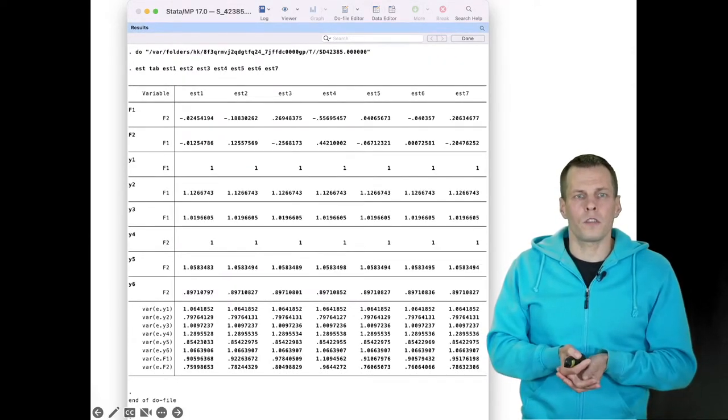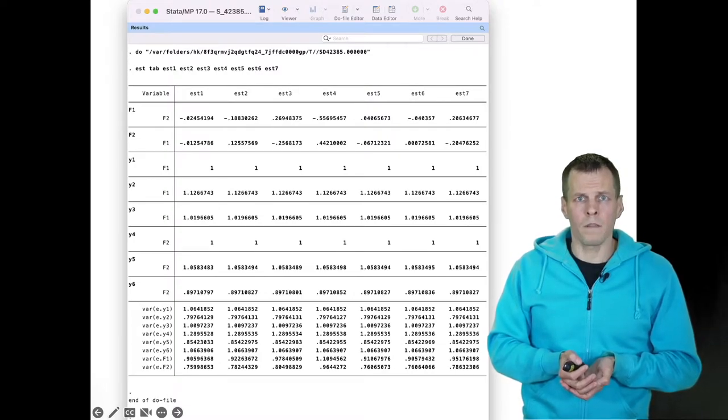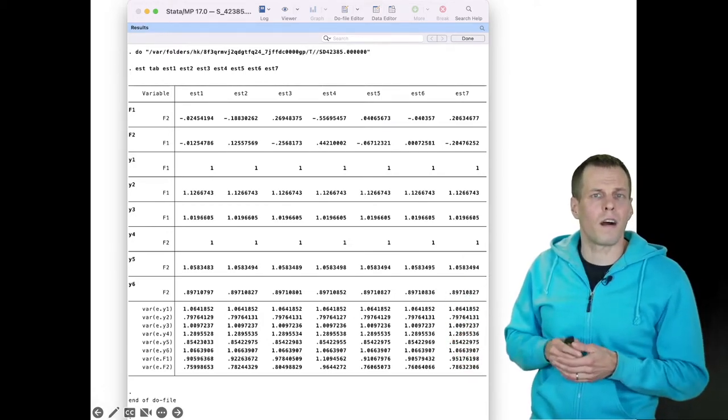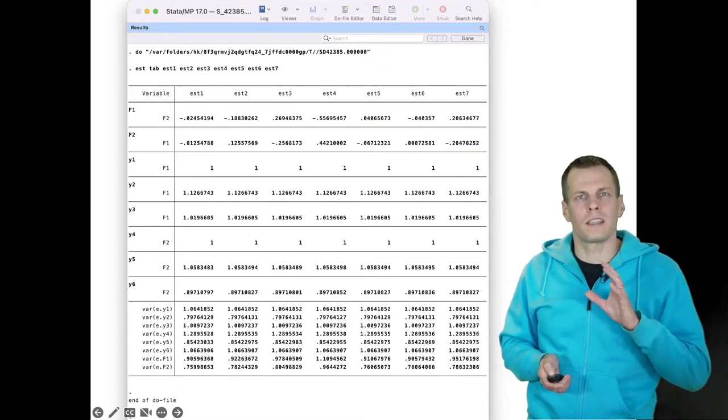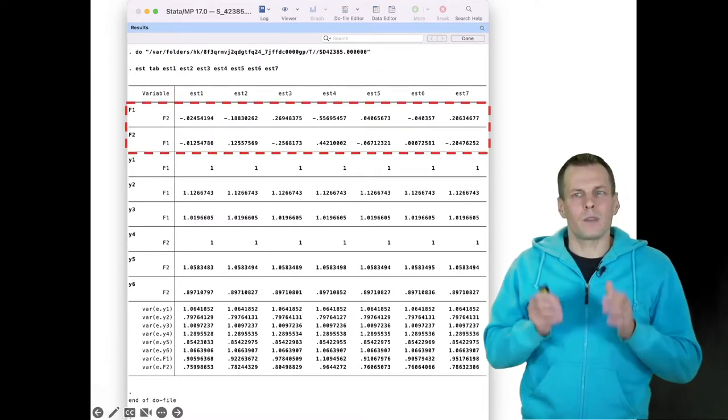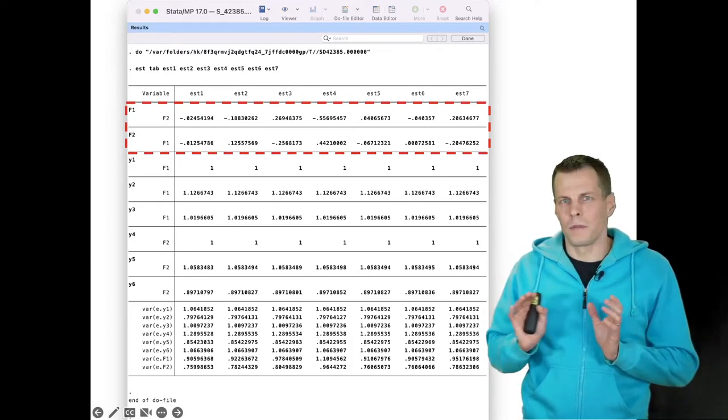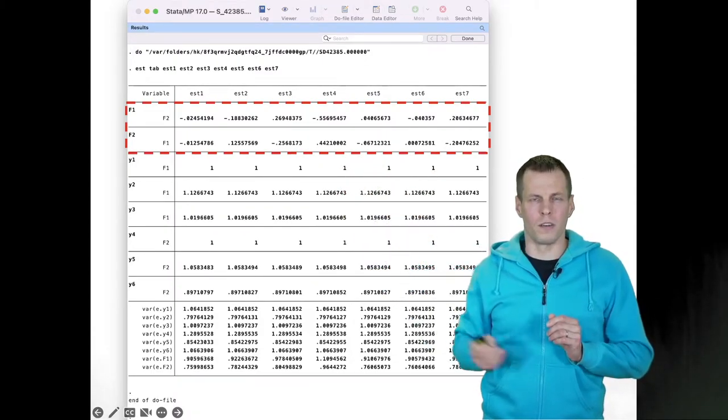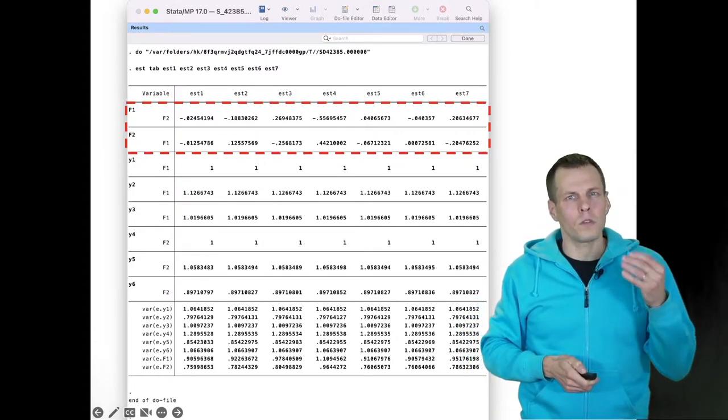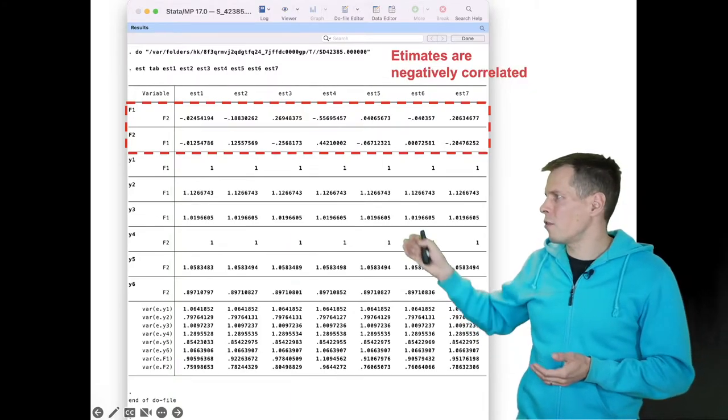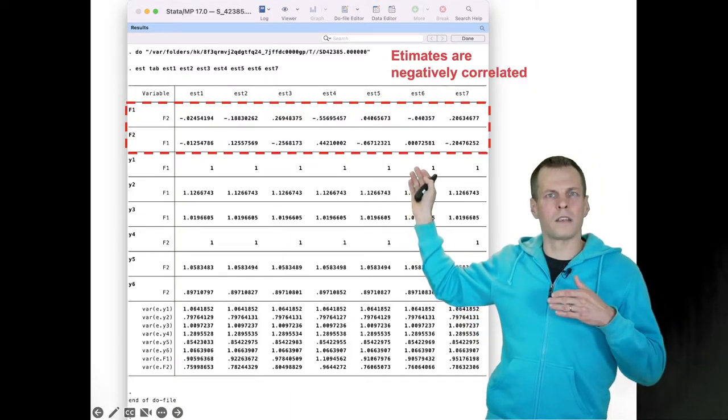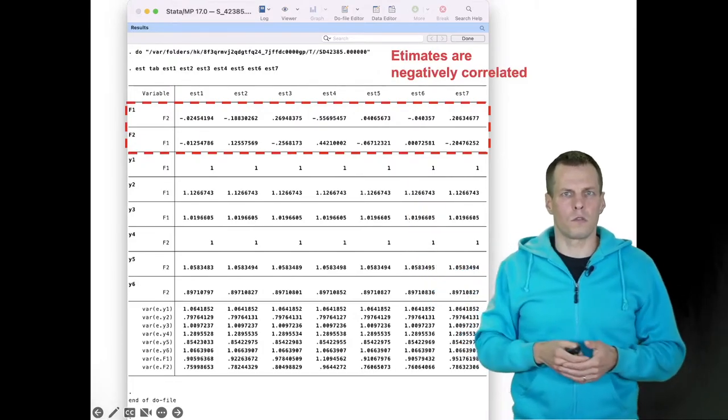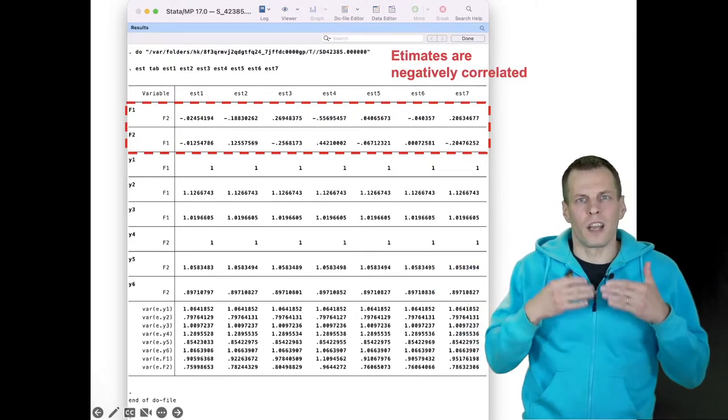If we compare the first seven models estimated from these random starting values, we can see that all the factor loadings, all the error variances for the indicators are the same. So these are identified. But we note that the regression paths between these two latent variables vary depending on which starting values we apply, and this is an indication of model non-identification. We also note that the estimates are negatively correlated.